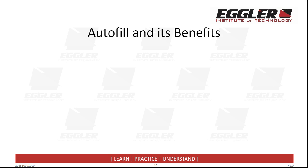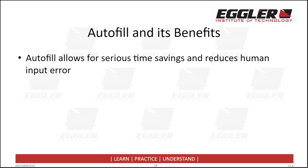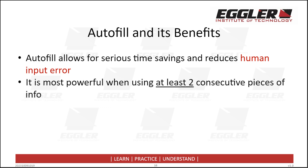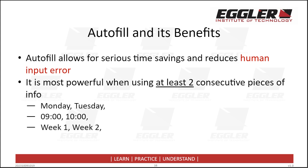Autofill can be a huge time saver whilst reducing the potential for human input error. Autofill can take a guess with only a single data point, but this is often going to end poorly. By providing at least two consecutive pieces of data, Autofill will be able to greatly increase its prediction accuracy. The important thing to highlight is that Autofill doesn't just predict numbers — it is able to predictively populate things such as days of the week, hourly times in a schedule or timetable, week numbers, etc. The main thing needed is some kind of pattern that Autofill can use to predict what comes next.